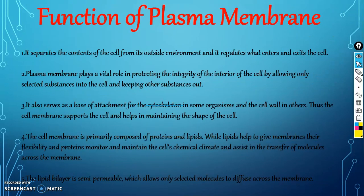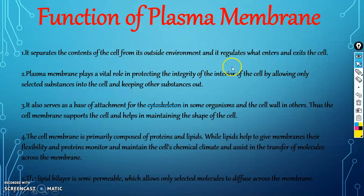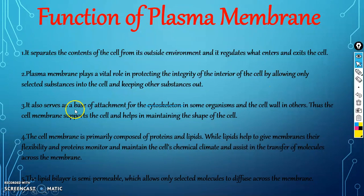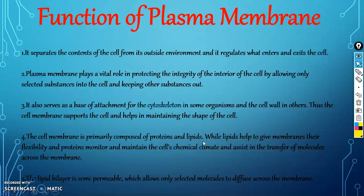The functions of the plasma membrane: it separates the content of the cell from the outside and regulates what enters and exits the cell. The plasma membrane plays a vital role in protecting the integrity of the interior of the cell. It also serves as a base of attachment for the cytoskeleton in some organisms. The cell membrane is primarily composed of proteins and lipids, and the lipid bilayer is semi-permeable, allowing only selected molecules to diffuse across the membrane.